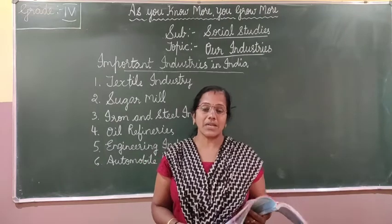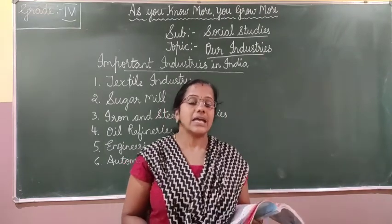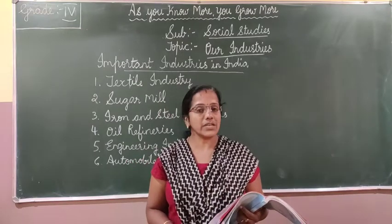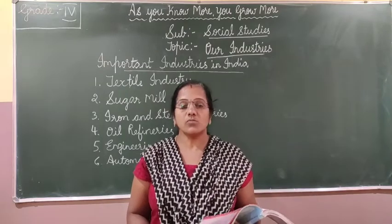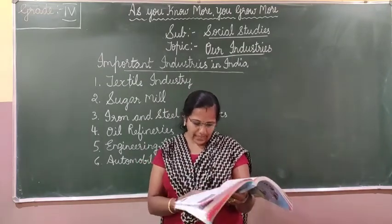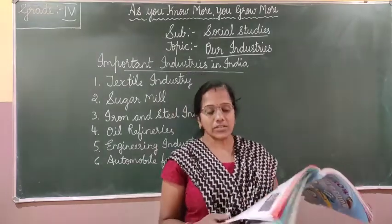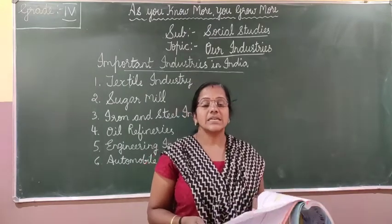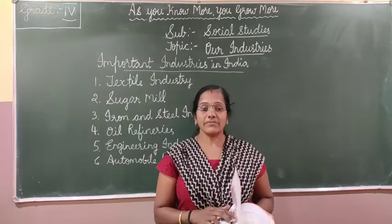Electricity is the main thing, because the machines will run on electricity and also the factories need lighting. So electricity is also an important thing. Then water — most of the industries require water. It is a major important factor. Industries like cotton textiles, jute, etc. — for most of these industries, water is also an important factor.